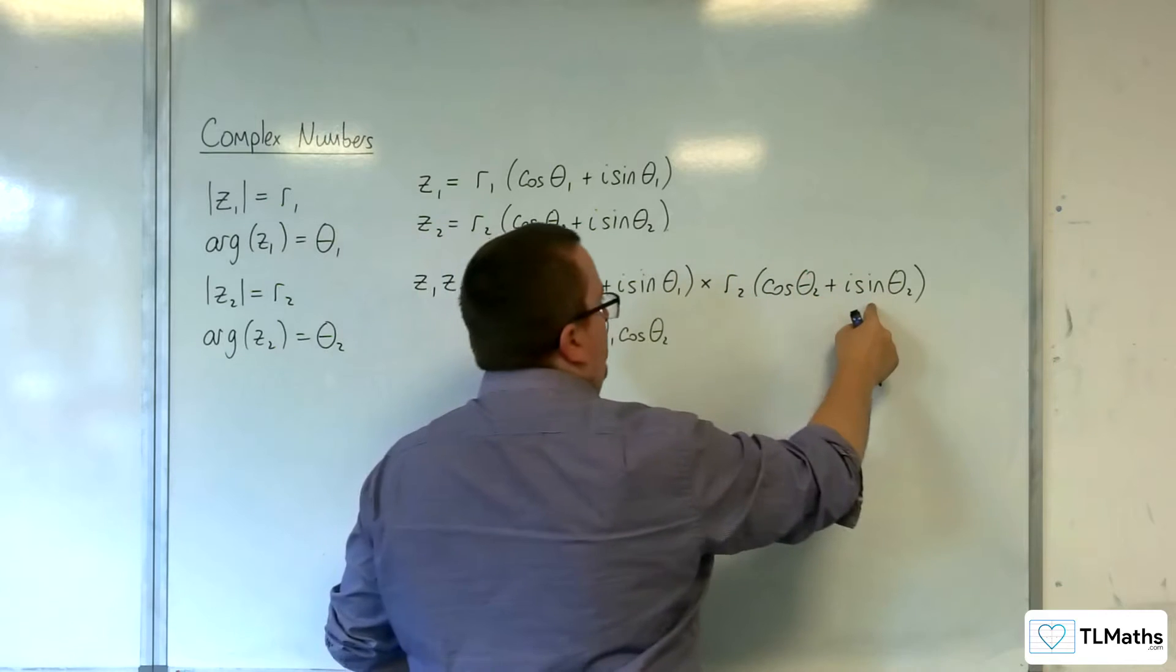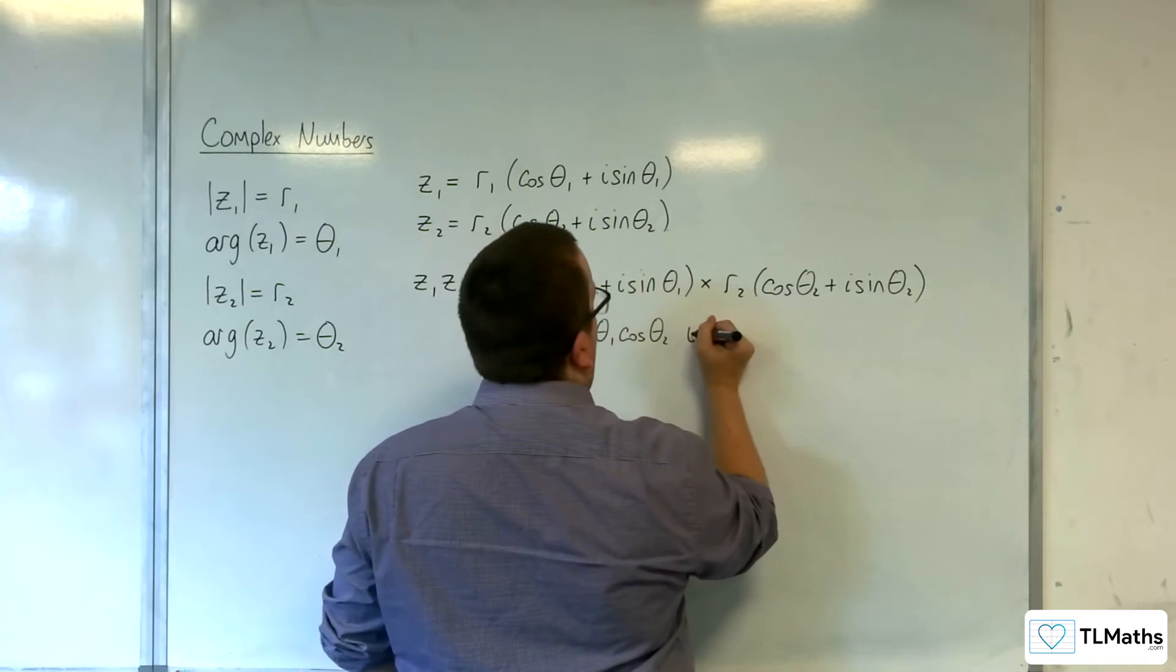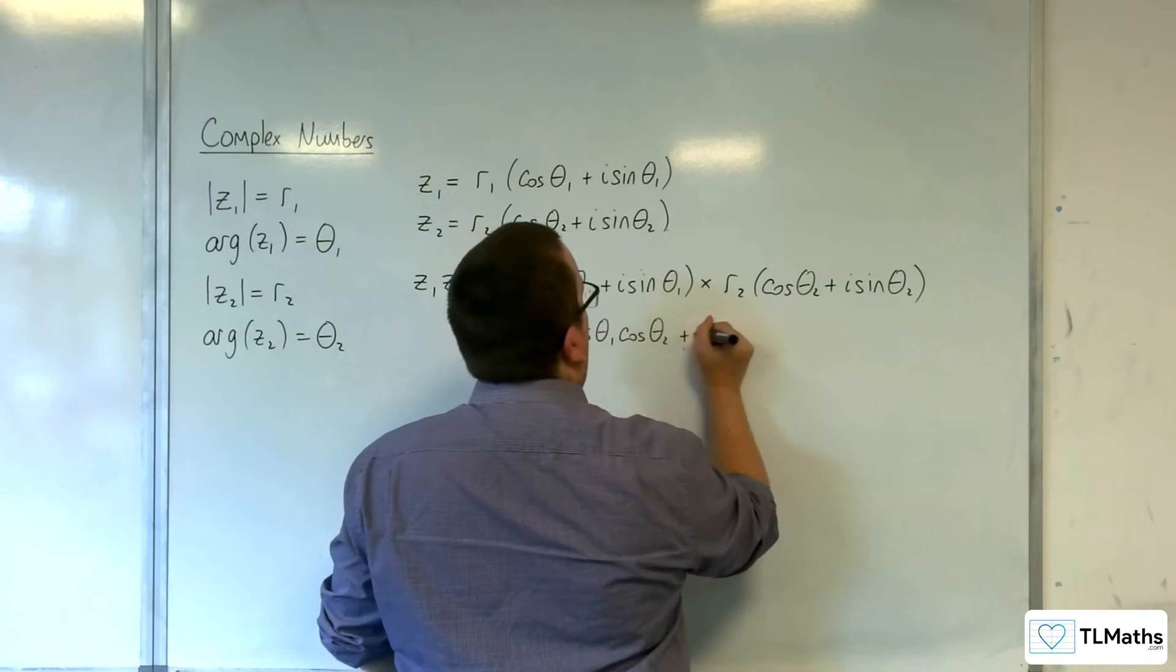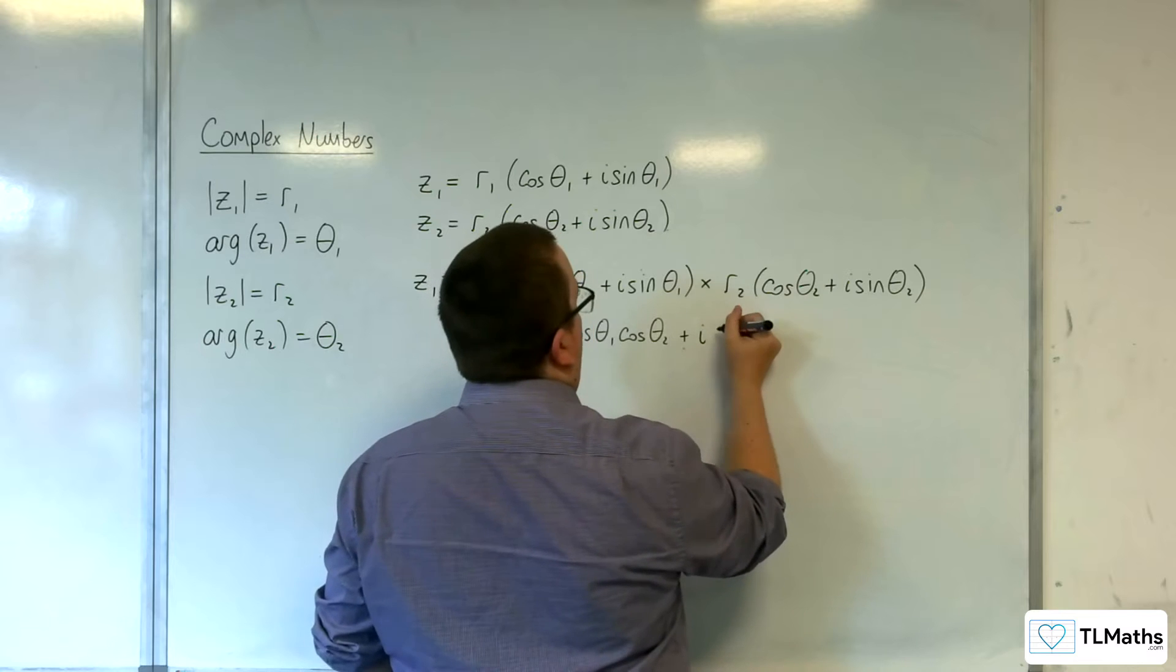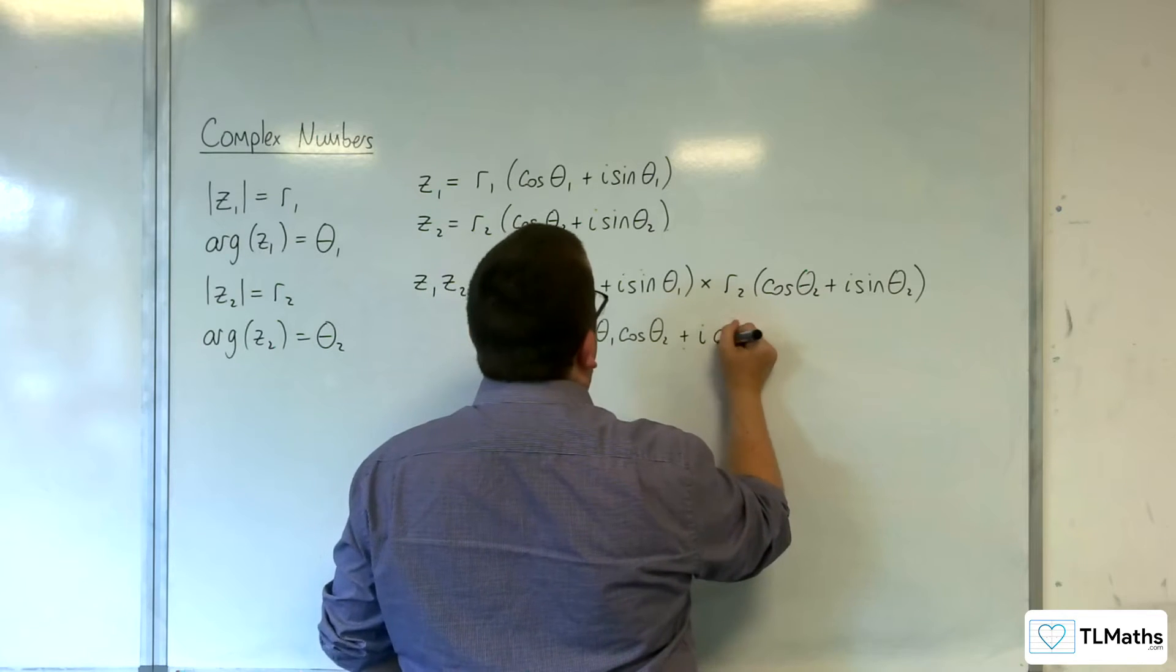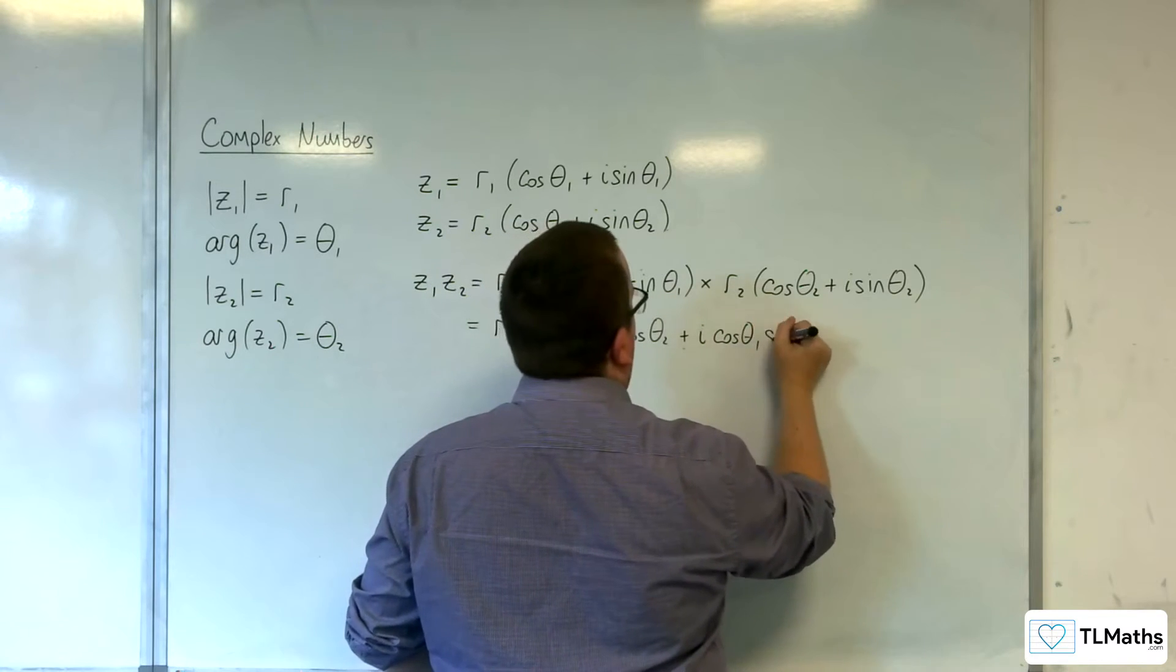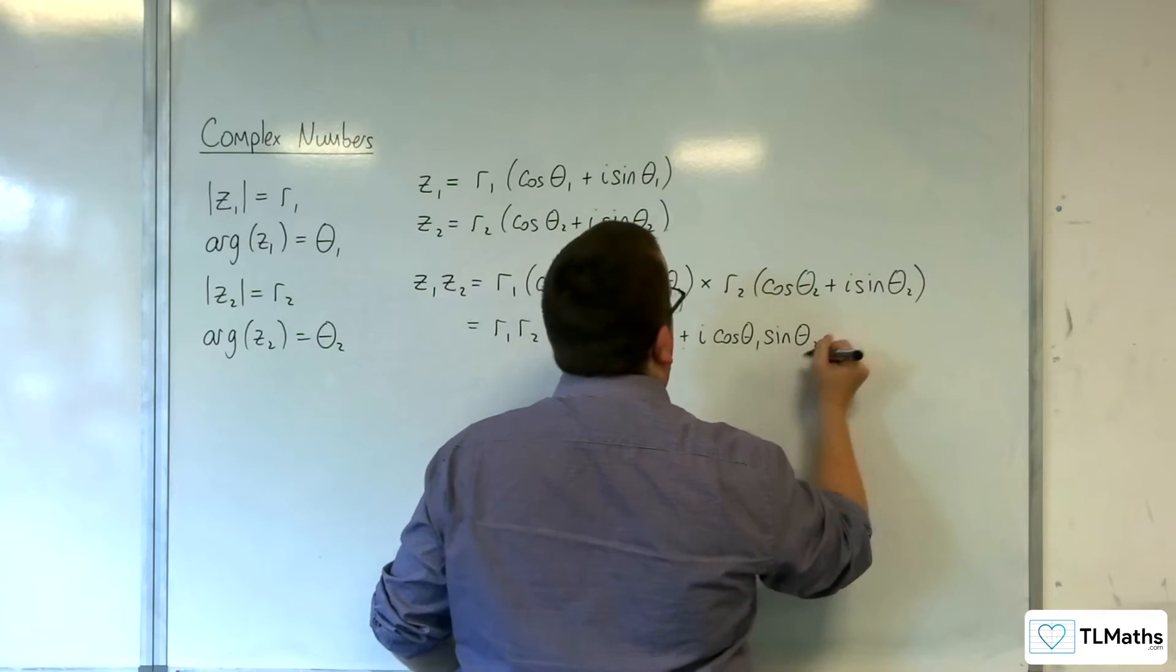Cosine theta1 times i sine theta2, so plus i, and we'll have it as cosine theta1 sine theta2.